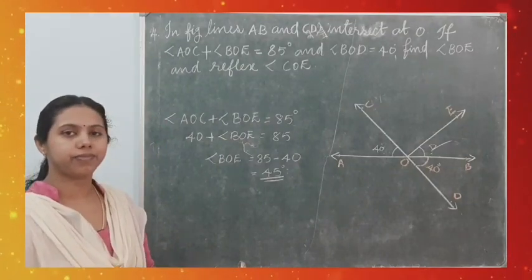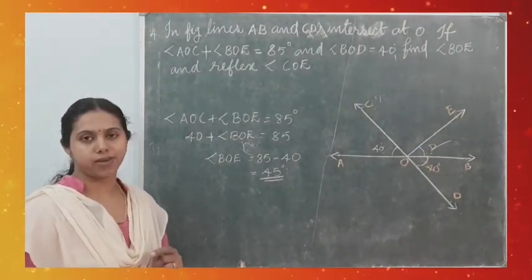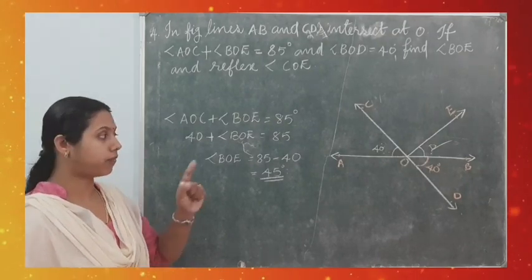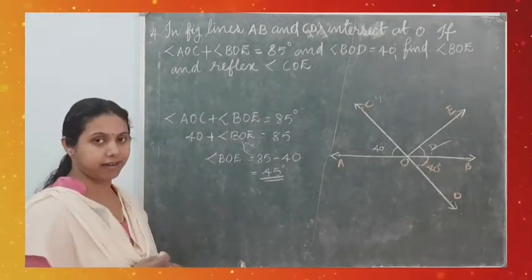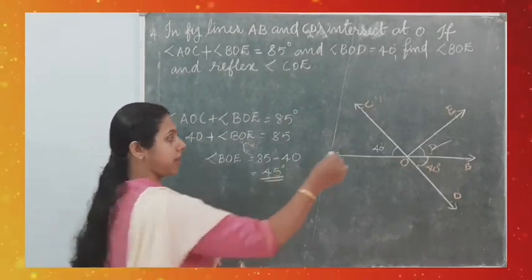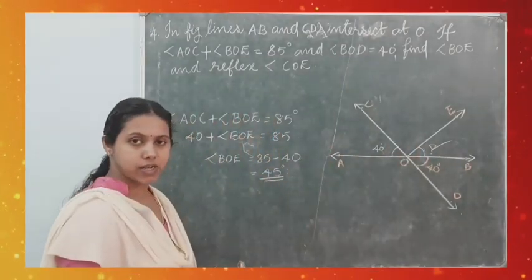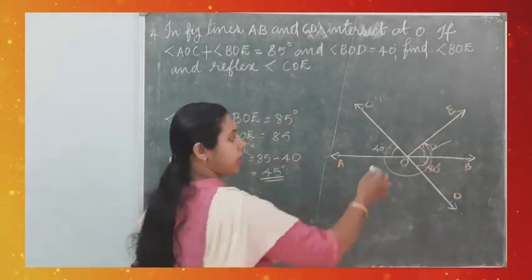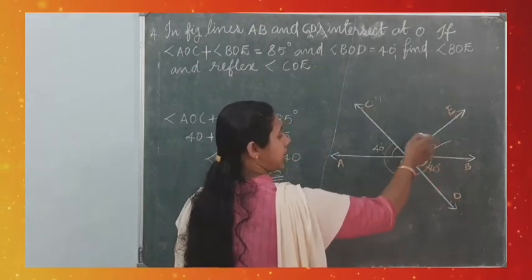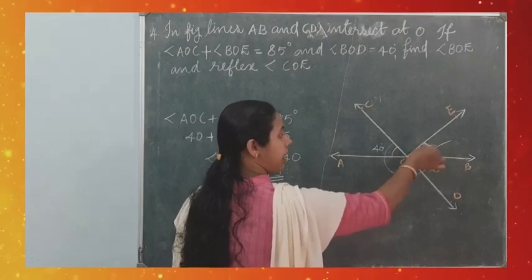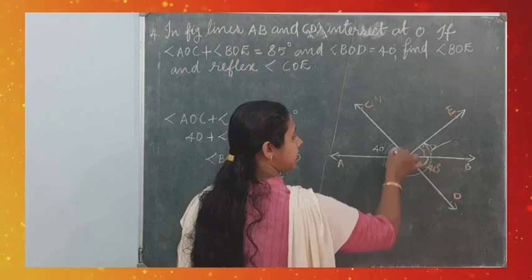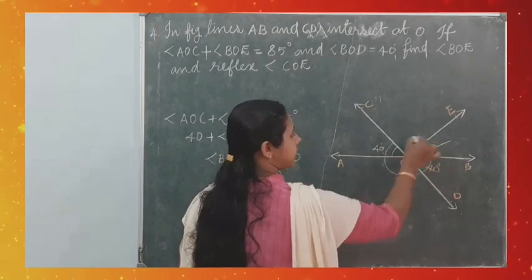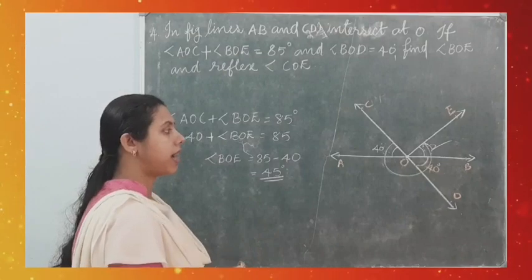Now to find the reflex angle COE, we first need angle COE. Since AB is a straight line, angles AOC, COE, and BOE are adjacent angles forming a straight line, so angle AOC + angle COE + angle BOE = 180°. Substituting: 40° + angle COE + 45° = 180°, so angle COE = 180° − 85° = 95°.